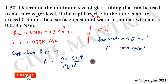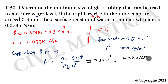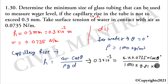सभी values put करते हैं: h = 0.3 × 10⁻³ meter equal to 4 × 0.0735 × cos0° / (ρ × g × d)। cos0° = 1, rho = 1000 kg/m³, g = 9.81 m/s²। d को निकालने के लिए उसे नीचे से ऊपर लाएंगे।